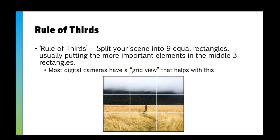We can split our scene into nine equal rectangles. Usually we put the more important elements in the middle three. If you notice on some phones and various digital cameras, they'll have a grid view that adds in these rectangles. We can use that to compose our images and make them a lot more balanced and easier on the eye.